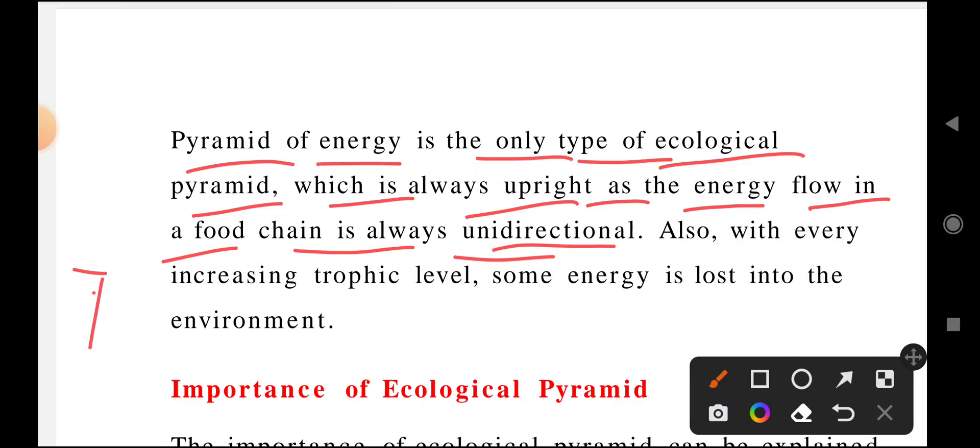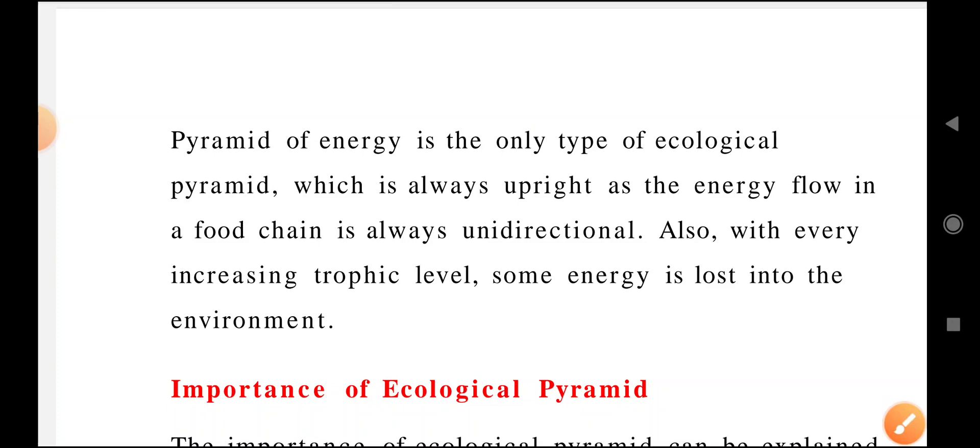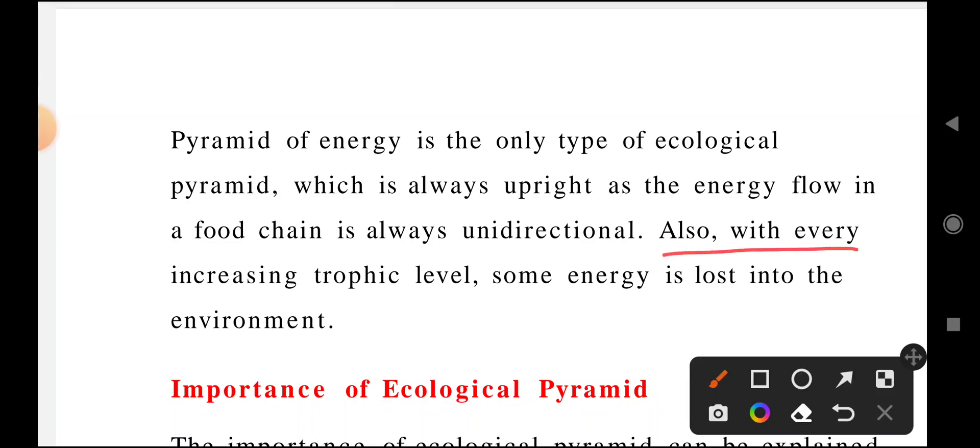Grass will be eaten by grasshoppers, then it will be eaten by mice - there is a chain system, the food chain system we discussed earlier. With every increase in trophic level, some energy is lost into the environment.